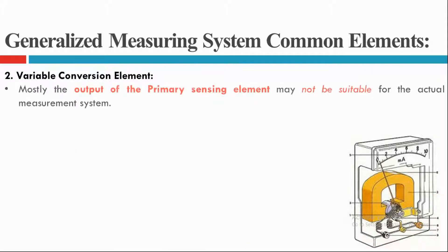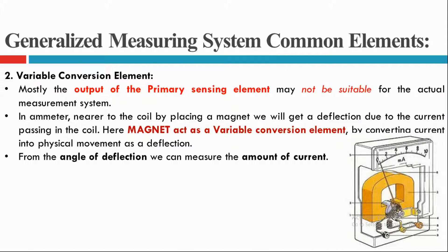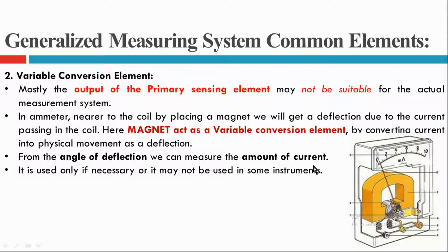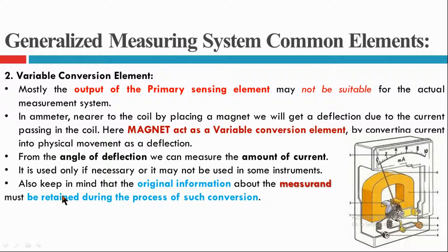The second one is the variable conversion element. Mostly the output of the primary sensing element may not be suitable for the actual measurement system. In an ammeter, by placing a magnet nearer to the coil, we get a deflection due to the current passing in the coil. The magnet acts as a variable conversion element, converting the current into a physical movement as a deflection. From the angle of deflection we can measure the amount of current. The variable conversion element is used only if necessary and may not be used in some instruments. The original information about the measurement must be retained during such conversion.